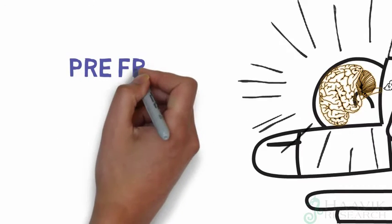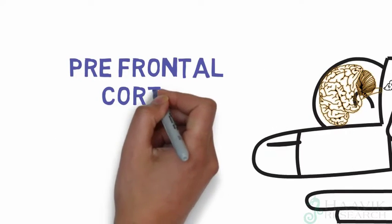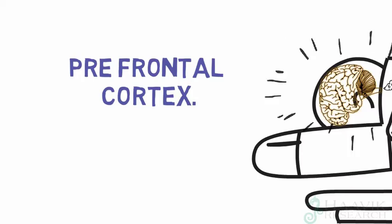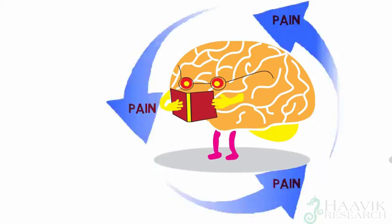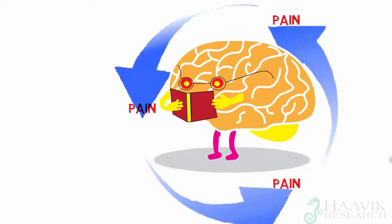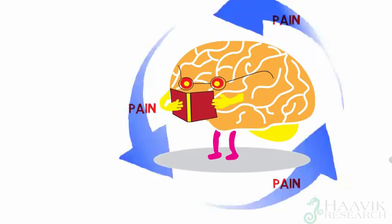In particular, chiropractic adjustments change the function in a part of your brain called the prefrontal cortex, and the prefrontal cortex is actually the part of your brain that is very involved in how we end up in this vicious chronic pain cycle.